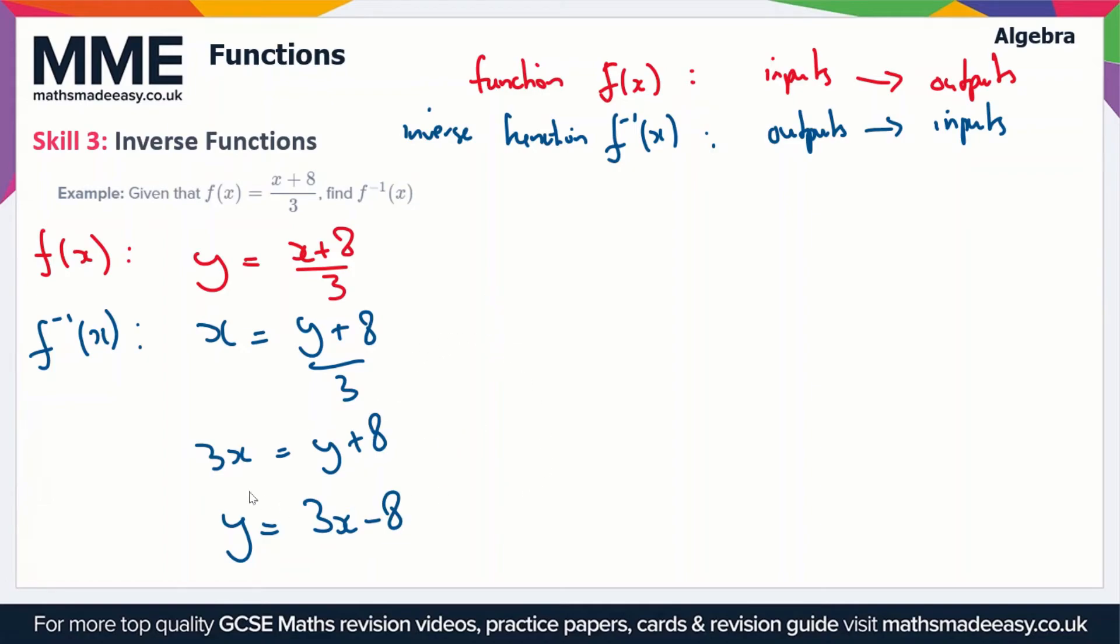So this is our inverse function now, and we just get rid of the y and we can write f⁻¹(x) = 3x - 8. So this particular method works for any function. All you do is set the function f(x) equal to y, and then swap the y and the x around and rearrange for y to get the inverse function.